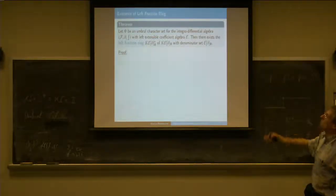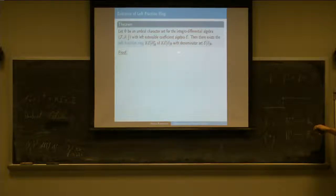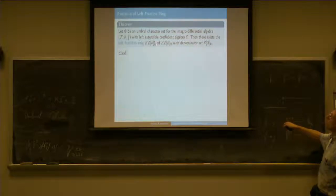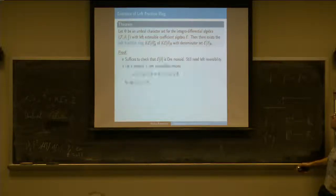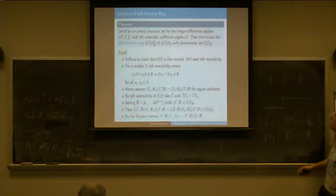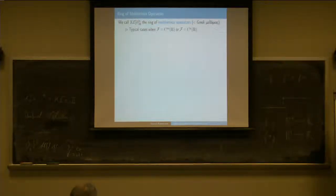Most of the work is already done. We have shown left permutability, and it is then easy work to show that the left fraction ring does exist. This is what I write with this star notation—that's what I call the ring of Methorius operators, that's the left fraction ring.